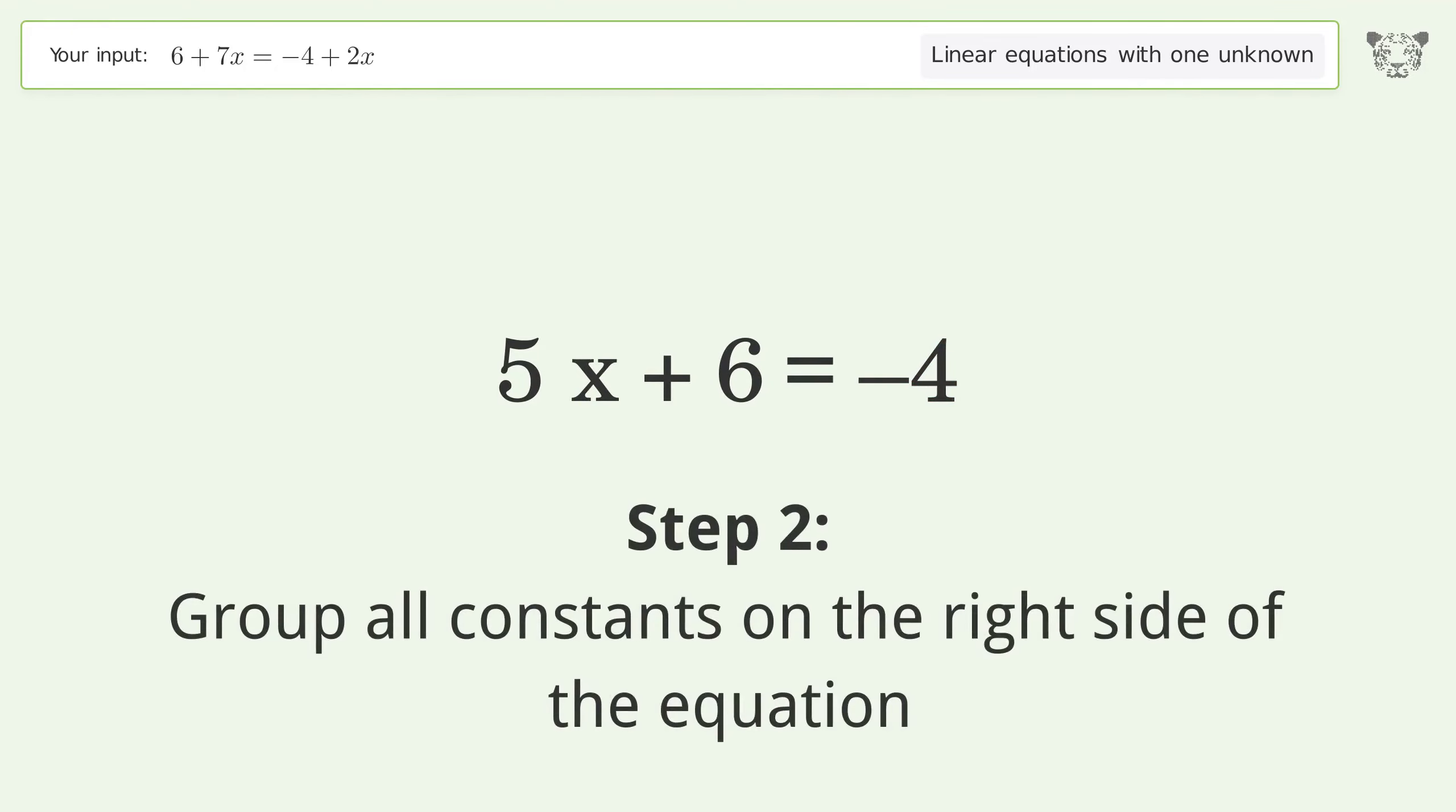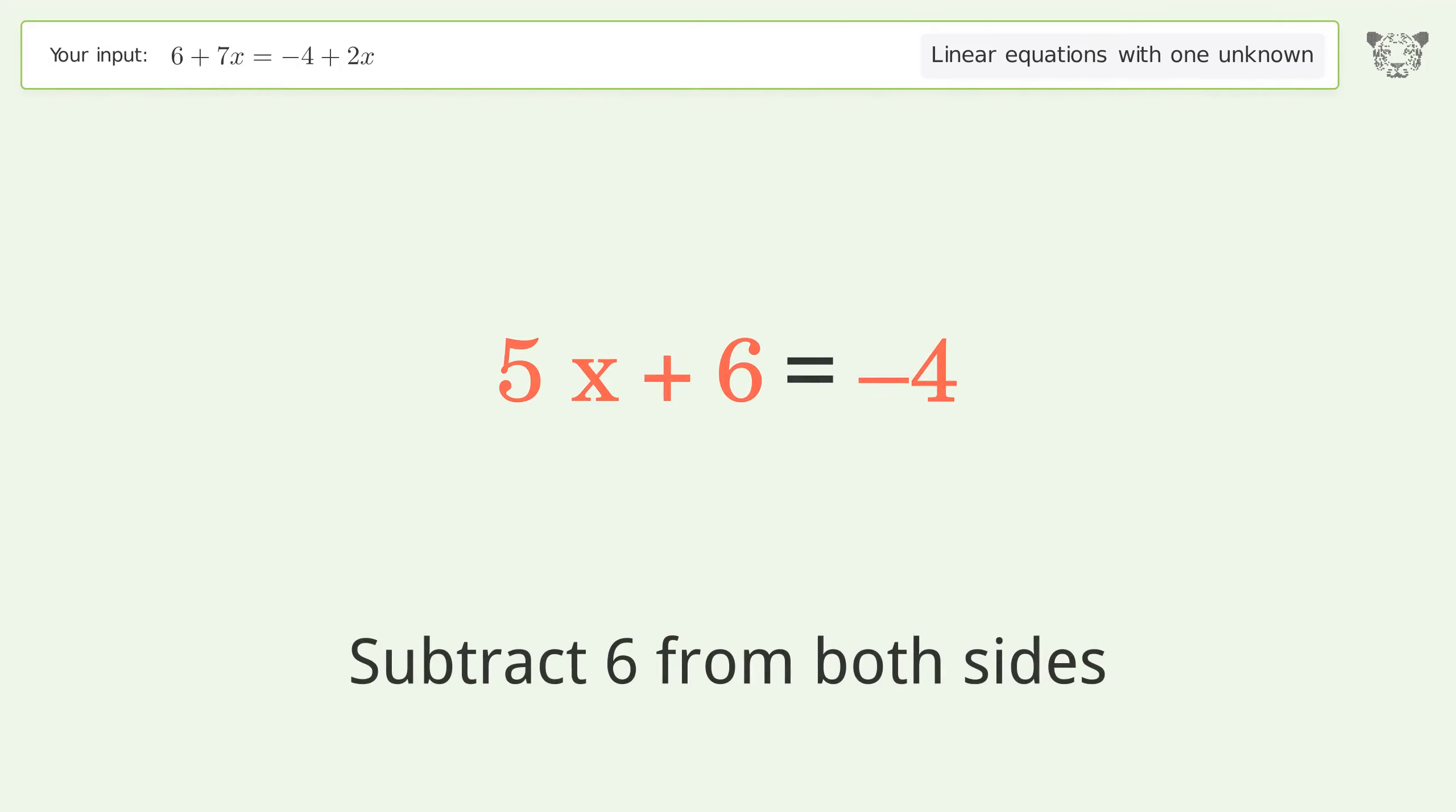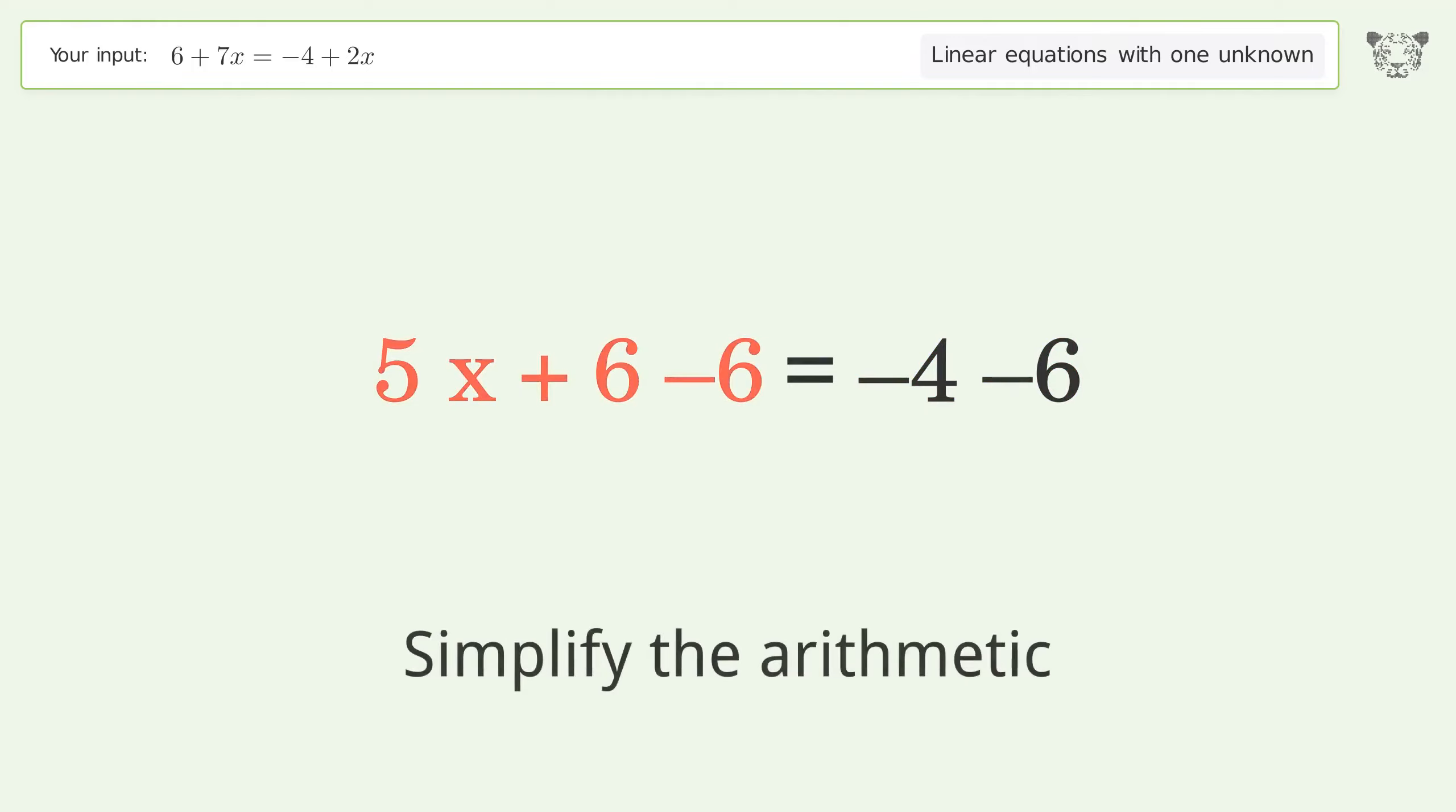Step 2: Group all constants on the right side of the equation. Subtract 6 from both sides. Simplify the arithmetic.